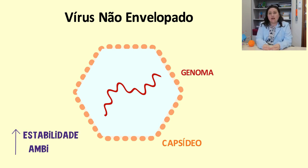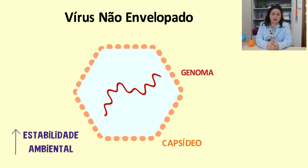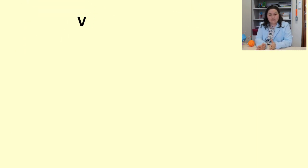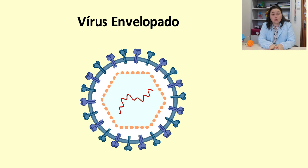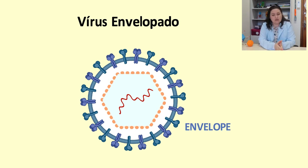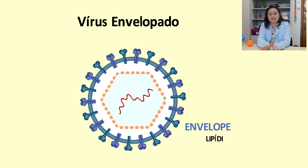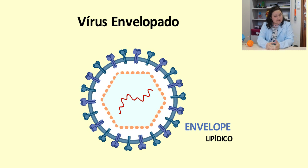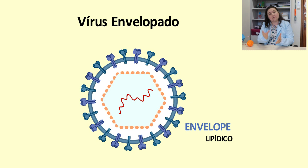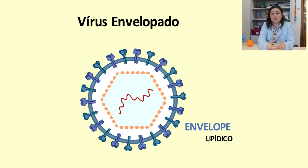Podendo ser esses vírus mantidos estáveis em águas, esgotos, alimentos por longos períodos, de semanas a meses. Já os vírus envelopados, como é o caso do coronavírus, esses possuem uma membrana de origem lipídica, que vem da célula hospedeira. Ou seja, quando o vírus se replica na célula, ao sair dessa célula, ele leva um pedaço dessa membrana, tendo assim essa origem lipídica.